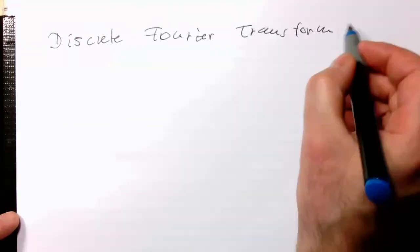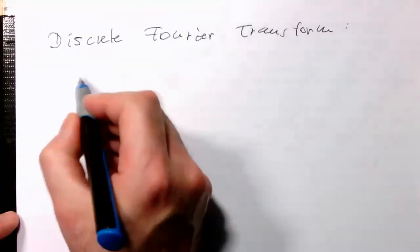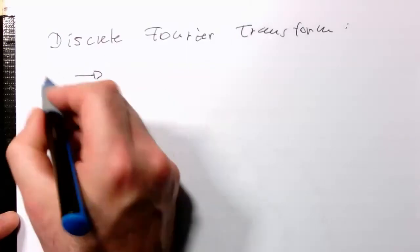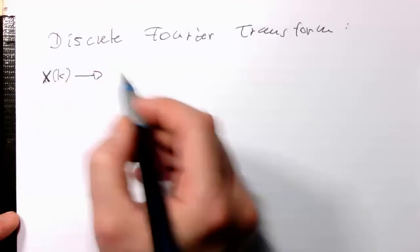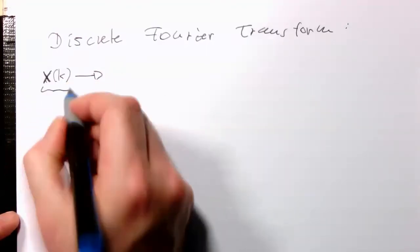So remember the discrete Fourier transform gets frequency samples. I should write this like capital X, X of k. So these are frequency samples.